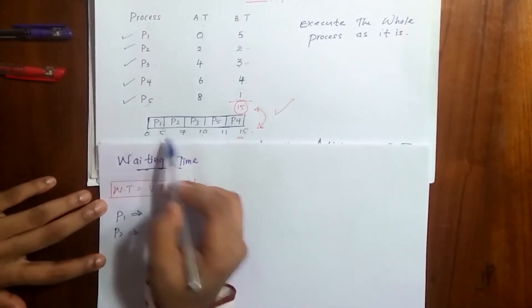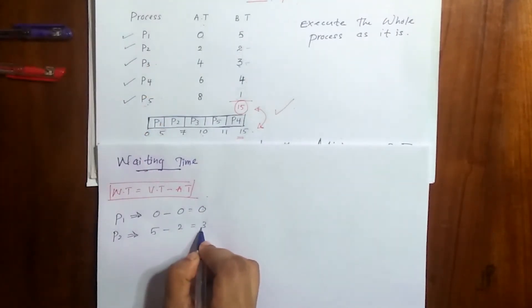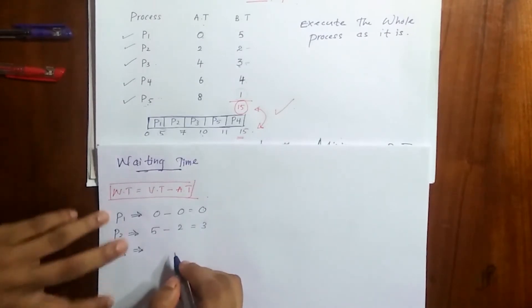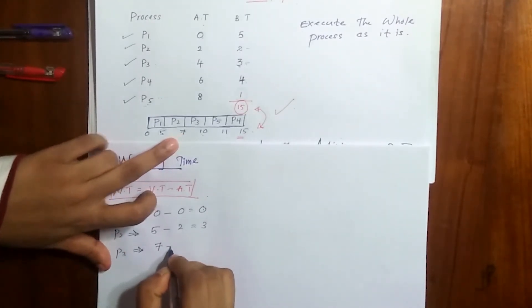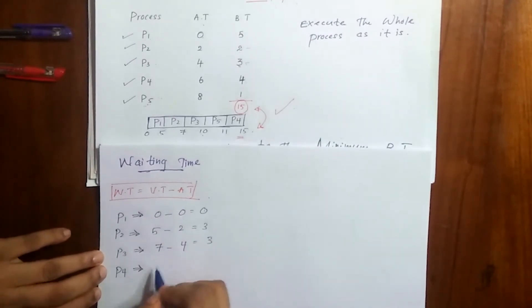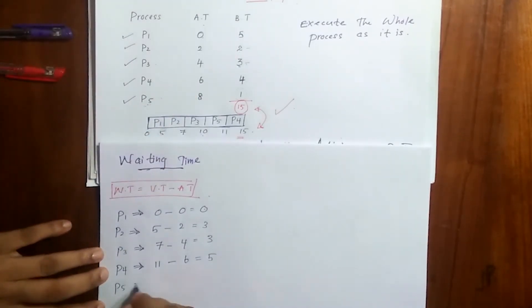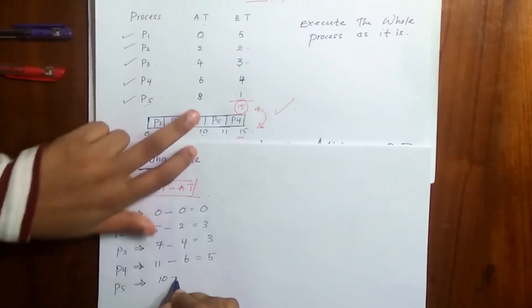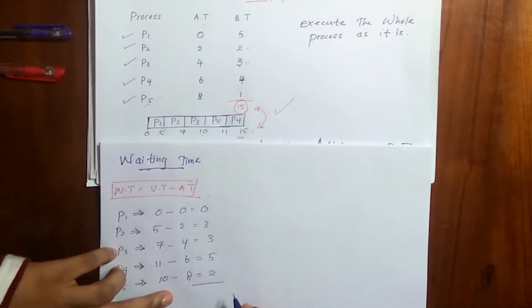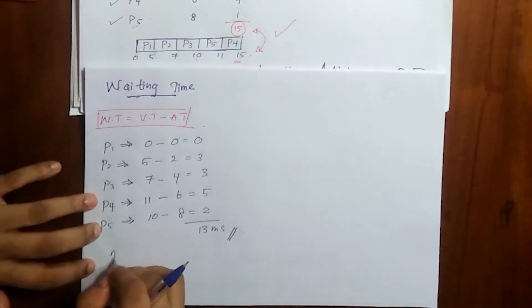Let's start with P1 waiting time: it is 0 minus arrival time 0, which is 0. Then let's go to P2: it is 5 minus 2, which is 3. Then P3: it is 7 minus 4, which becomes 3 again. Then P4: it is 11 minus 6, which is 5. Finally P5: it is 10 minus 8, which becomes 2. We have the total waiting time: it is 13. Then the average waiting time is 13 divided by 5, so the answer becomes 2.6 milliseconds.